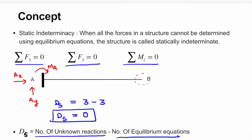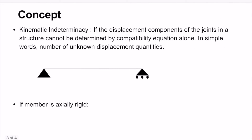Now let us move to kinematic indeterminacy. A structure is called kinematically indeterminate if the displacement components of the joints cannot be determined by compatibility equations alone. In simple words, the number of unknown displacement quantities is the degree of kinematic indeterminacy. For example, consider a simply supported beam and let us find the number of unknown displacement quantities.